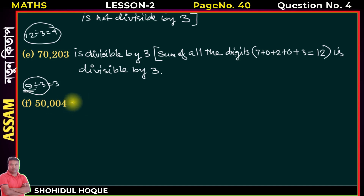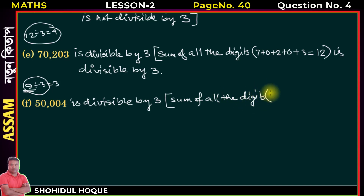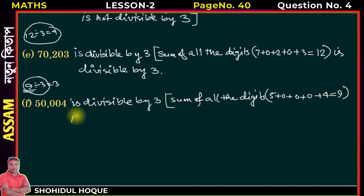So we also have 50,004. It is divisible by 3. Reason: sum of all the digits — 5 plus 0 plus 0 plus 0 plus 4 equals 9 — and 9 is divisible by 3.